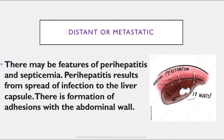Distant or metastatic features include perihepatitis and septicemia. Perihepatitis results from spread of infection to the liver capsule via the blood, causing adhesion formation with the abdominal wall. This is also known as Fitz-Hugh-Curtis syndrome. You can see in the picture that the liver is forming adhesions to the peritoneum.